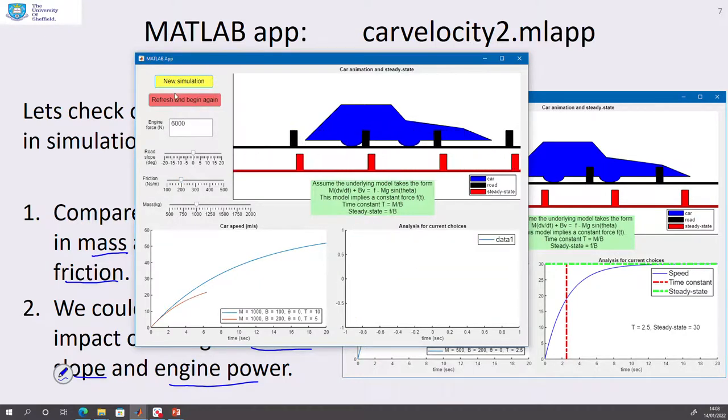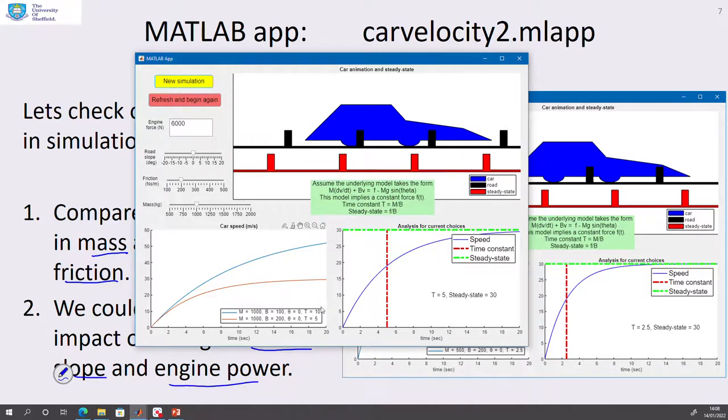Now, what do you notice? What you can see is I'm getting to a slower steady state. So increasing friction, I've got a slower steady state. But also, if you look in this bottom right side, this left figure and look at the legend, you can see the time constant has got faster. So I've increased the friction, the time constant has got faster.